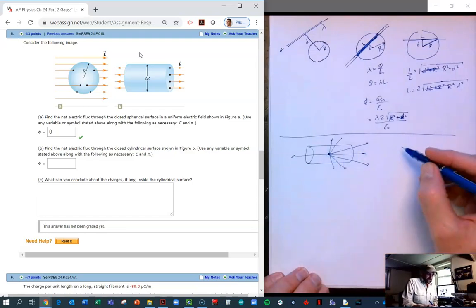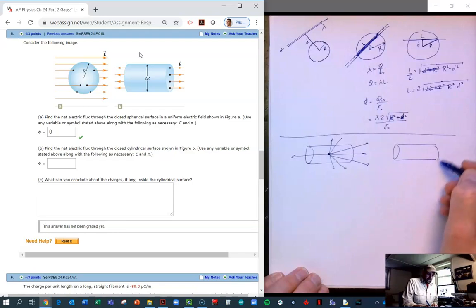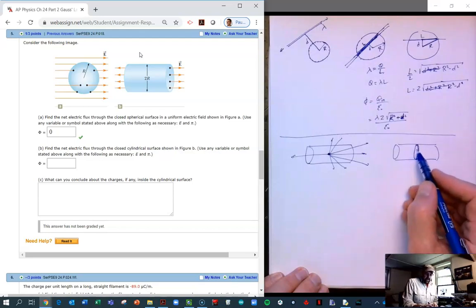So what must be happening in here is we must have something like this. So we have to have like a plate, a spherical plate of positive charge, okay?